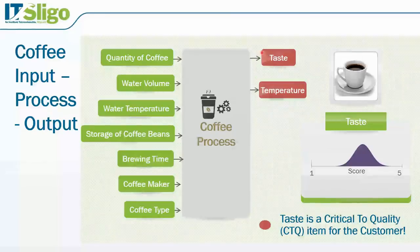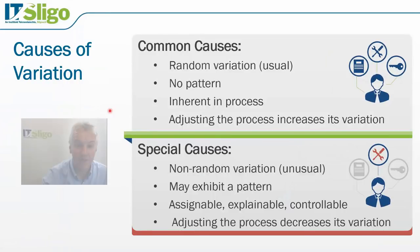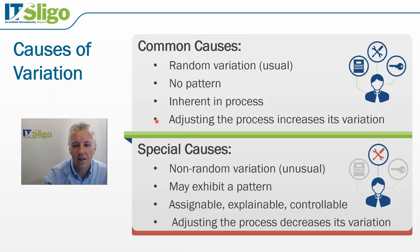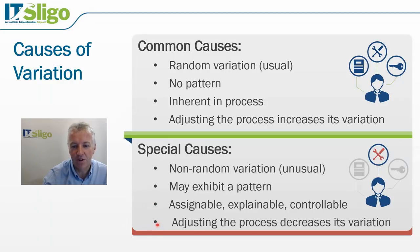Once you've defined a process, you can define the critical to quality characteristics, define the inputs, and start controlling those inputs. The less variation we have, the better. One of the things identified in Six Sigma is the idea of common cause versus special cause variation. Common cause variation is random variation — it's inherent within your process. If you tweak or adjust the process, it increases the variation. We want to identify common cause variation and differentiate it from special cause variation. Special cause variation is non-random, unusual, may exhibit a pattern. It's assignable, explainable, and controllable. If you adjust the process for special cause, it decreases variation.